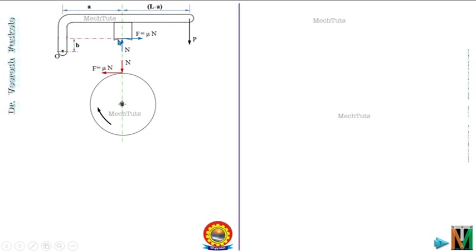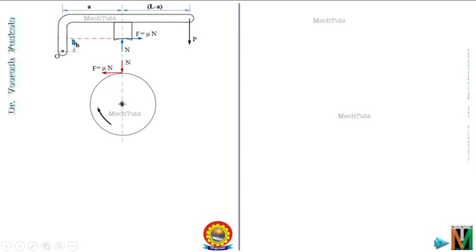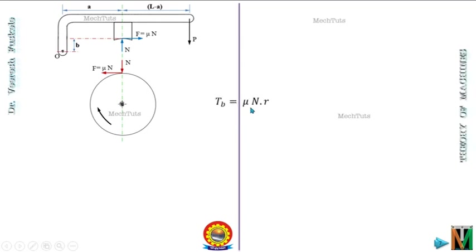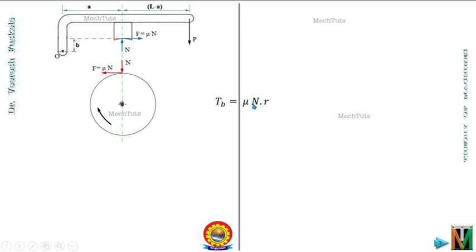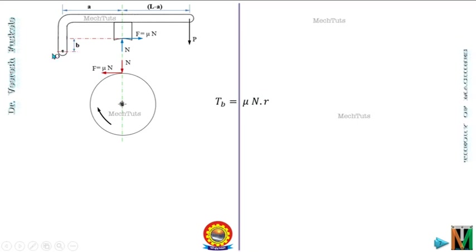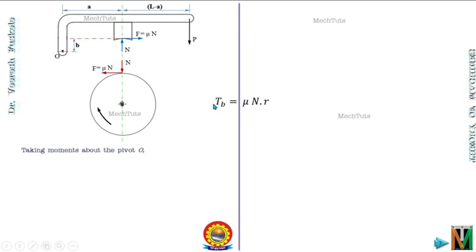You can see that the fulcrum point is below the line of action of the friction force by a distance b. As discussed earlier, the braking torque is given by T_b = μ × N × r, so we need to find the value of N. We can do this by taking moments about the fulcrum point O. We have forces N, F, and P in the free body diagram of the lever.